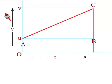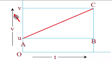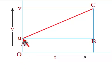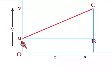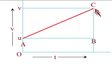In this graph, velocity V is on the Y-axis and time T is on the X-axis — a velocity-time graph. O is the origin, and U is the point from where the graph starts. That means the initial velocity when T equals 0 is U. The initial velocity is termed as U. AC is the graph line.